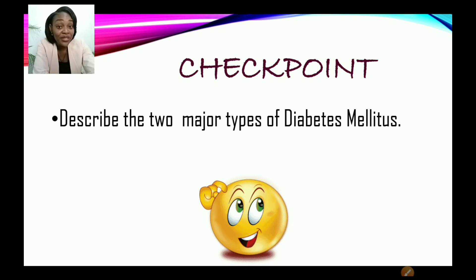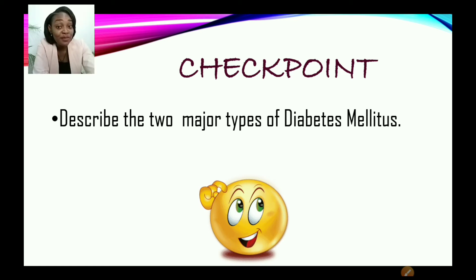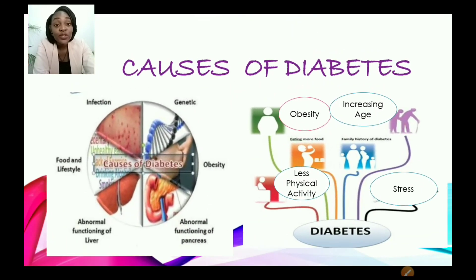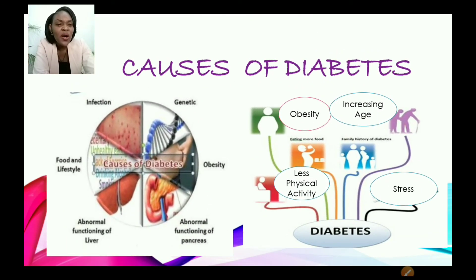Now, checkpoint. Describe the two major types of diabetes mellitus. We have type 1 and we also have type 2 — can you see the difference between both? Now let us move on to the causes of diabetes.